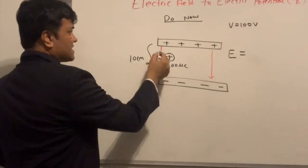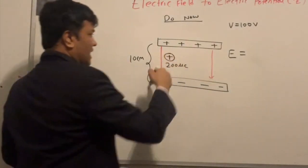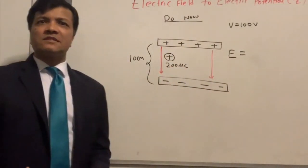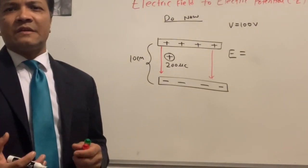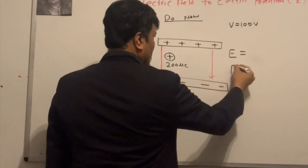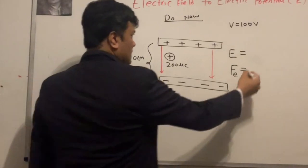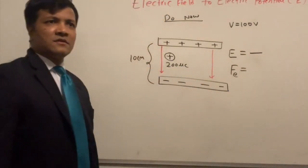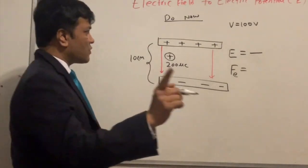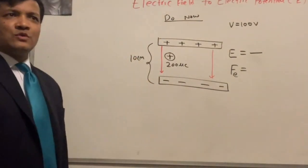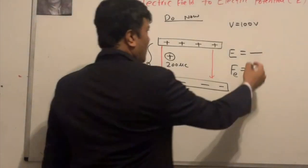I want you to find the magnitude of the electric field — we already know the direction. I also want to find the electric force. What is the formula for electric field? Is it F over Q? F over Q won't work because we don't have F.